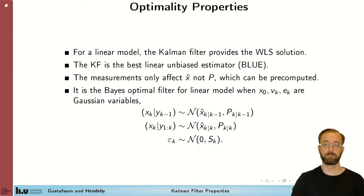Let's now look at optimality properties of the filter. For a linear model the Kalman filter provides the same solution as the weighted least squares method does. That means that the Kalman filter is the best linear unbiased estimator, that is BLUE.